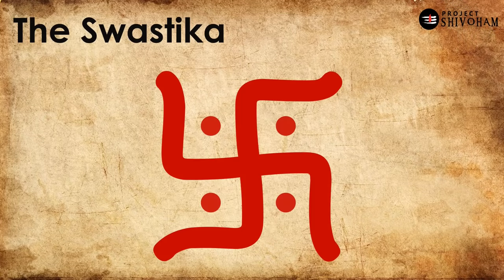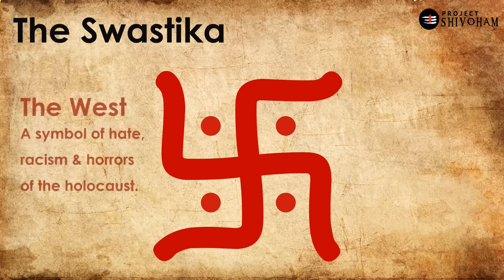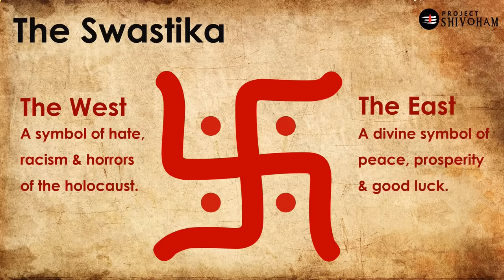Swastika — a name that needs no introduction. But the way it is perceived, it definitely does need an introduction. In the West, a swastika is a symbol of hate, racism, and the horrors of the Holocaust. And in a diametrically opposite manner, in the East, it is perceived as a symbol of peace, prosperity, and well-being. And this is the untold history of swastika.